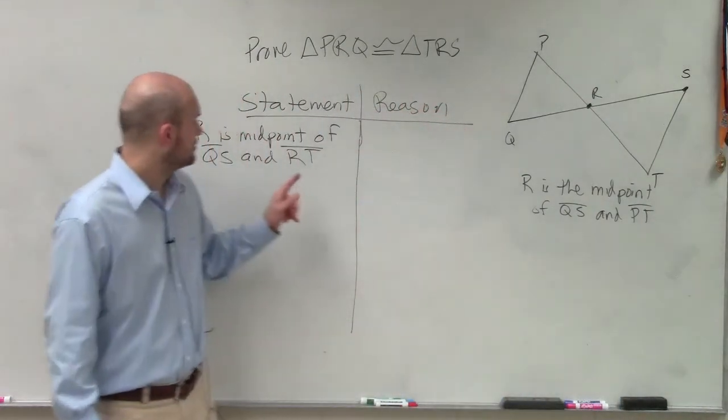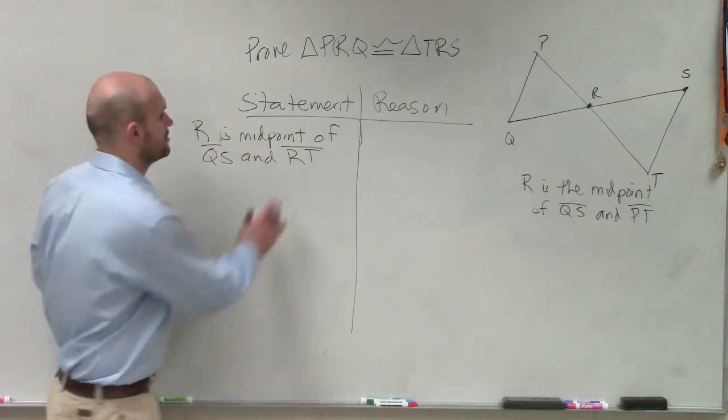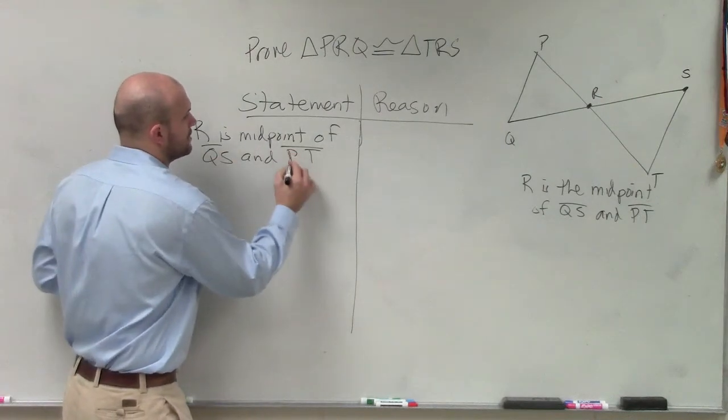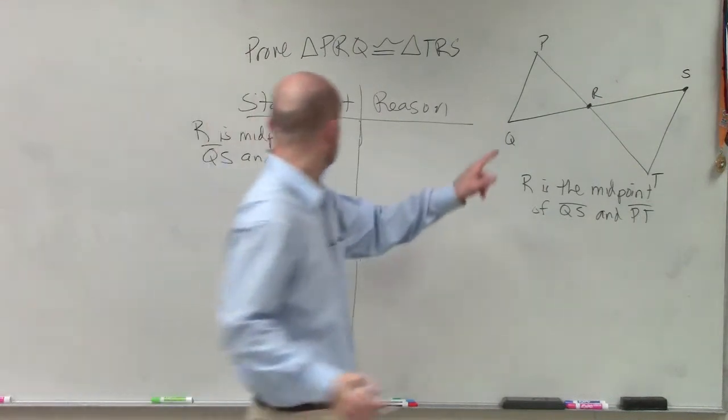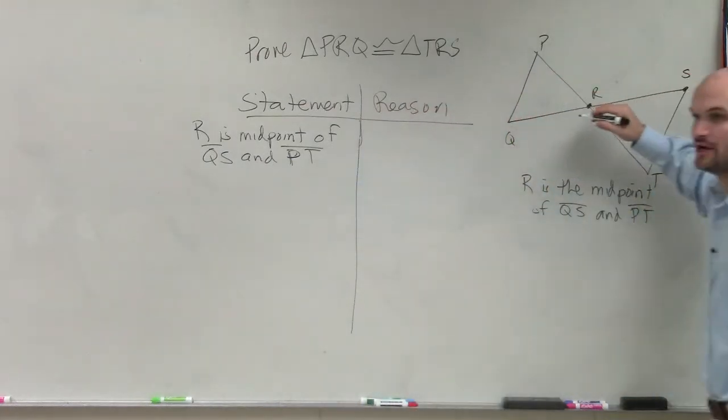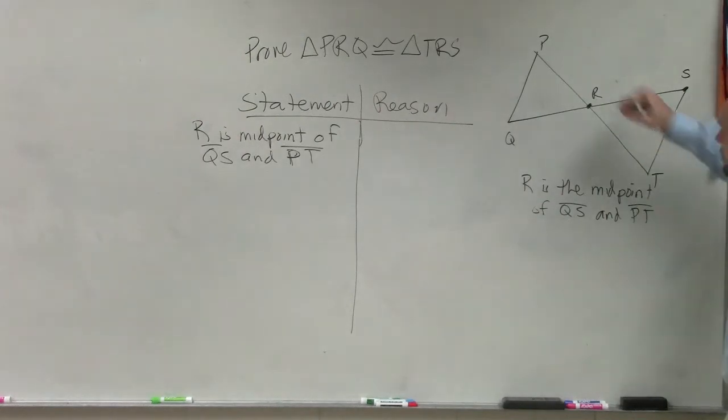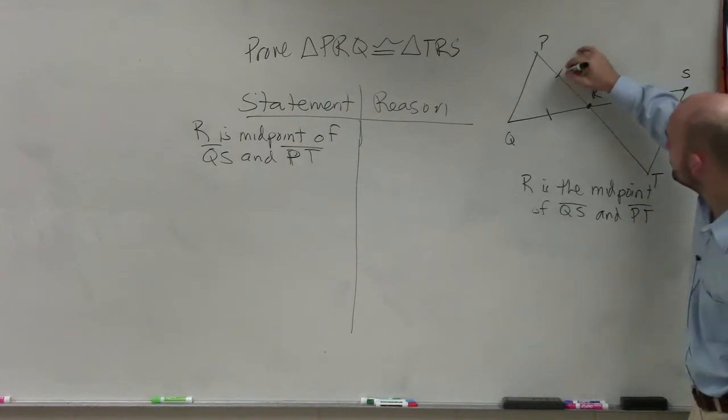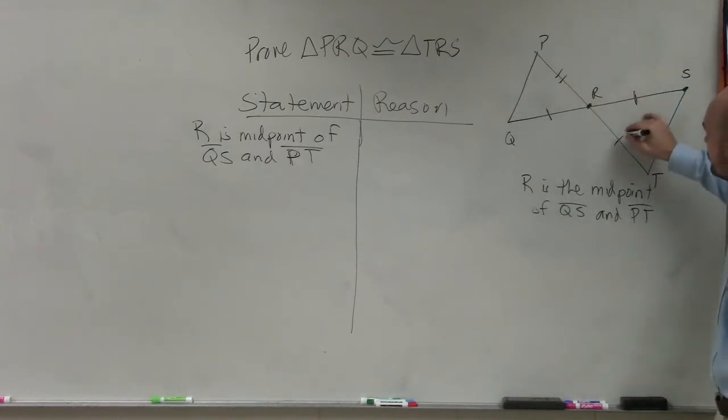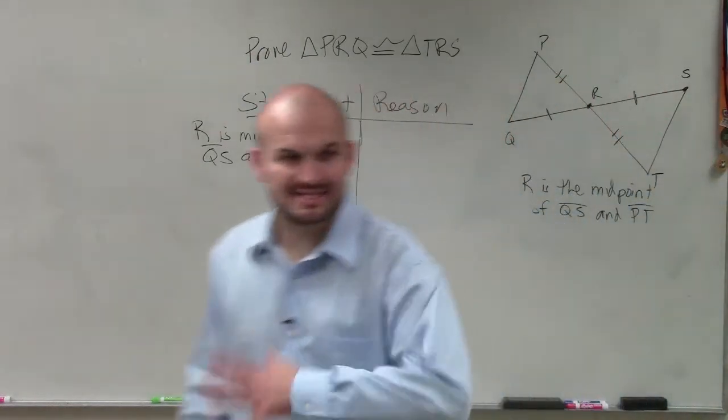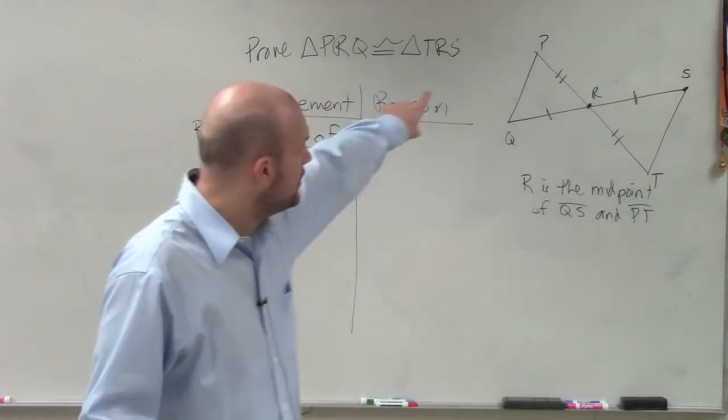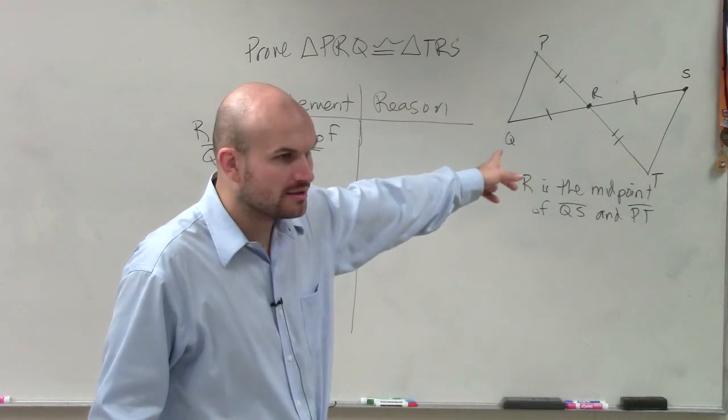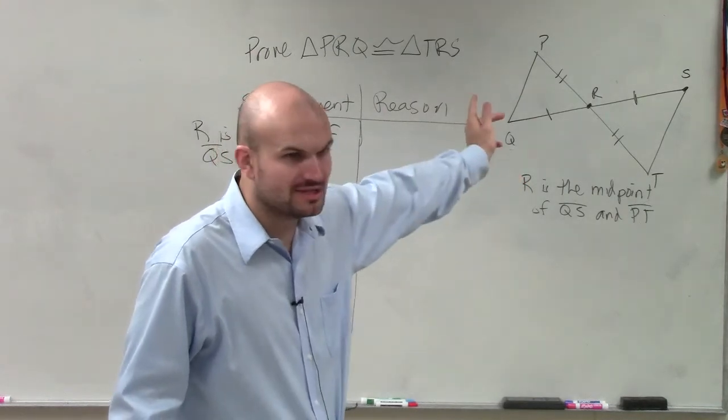They're equal to each other. So PR is congruent to TR. Again, make sure you distinguish the tick marks. We don't know that PR is equal to QR. So don't say they're both tick marks of 1.